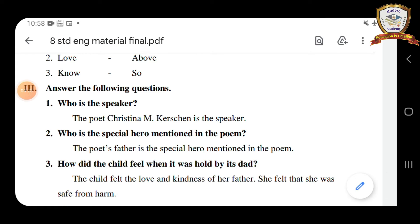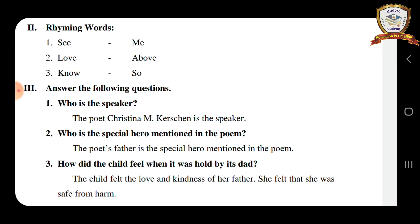Second one is love/above. Third one is no/so. We can find the rhyming words at the end of each line. Each and every line has a word that ends with the same pronunciation but different words — that is rhyming words. See/me, love/above, no/so.